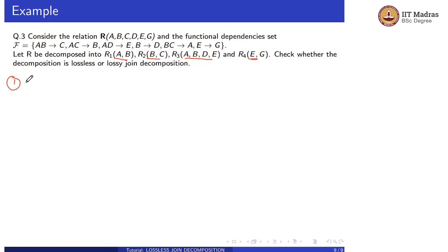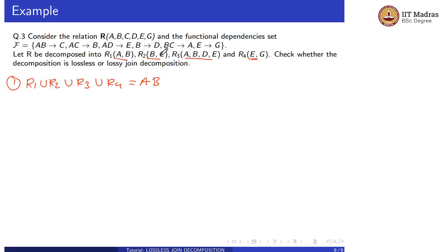First condition: R1 union R2 union R3 union R4. From R1 we get A, B; from R2 we add C; from R3 we add D, E; from R4 we add G. So the union equals A, B, C, D, E, G which equals relation R. First condition is satisfied.